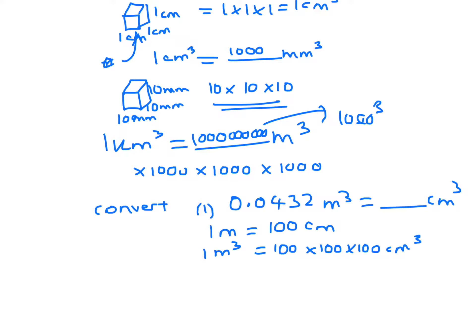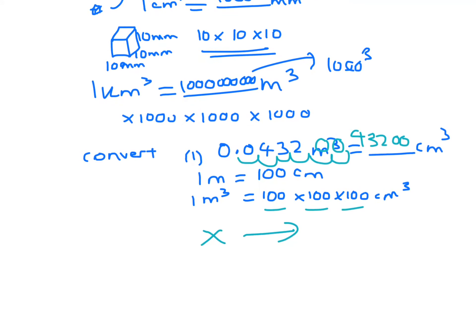So what that means is you need to move the decimal point six places because we've got times, so we're going that way. So you've got to put zeros in. So it's 43,200 cubic centimeters.